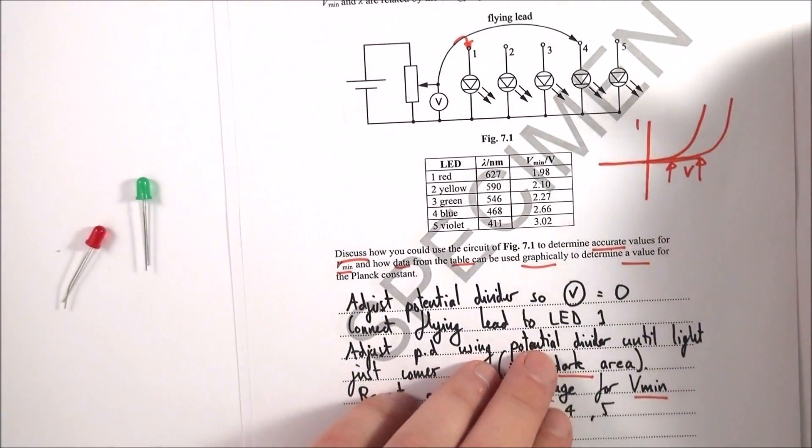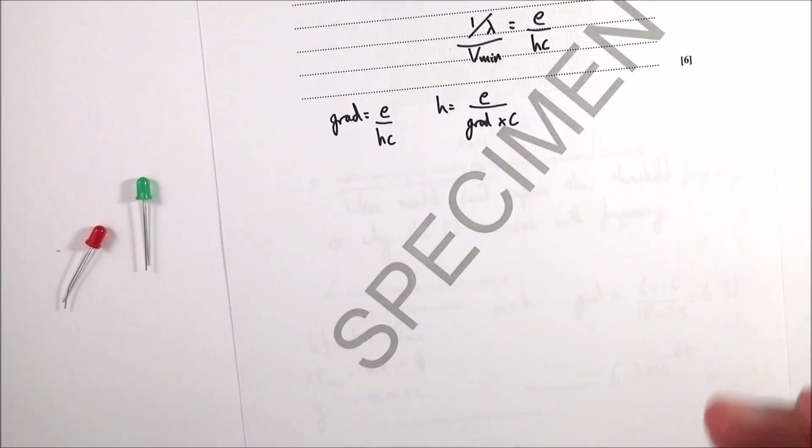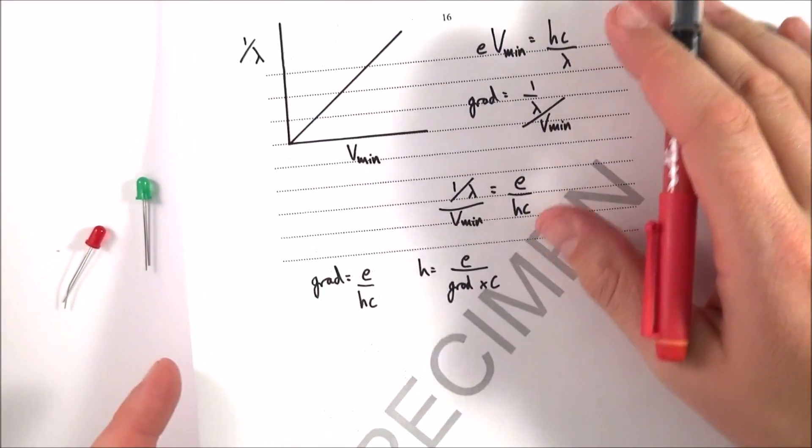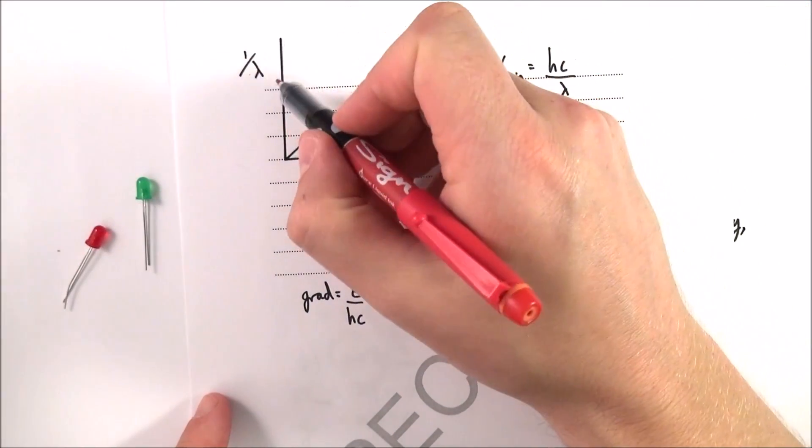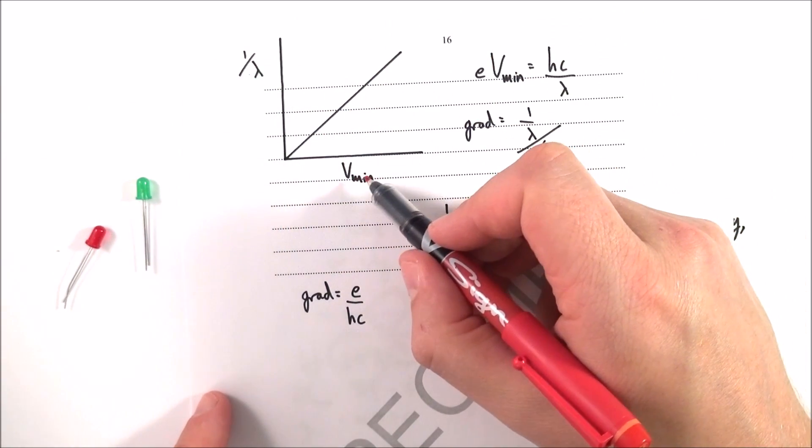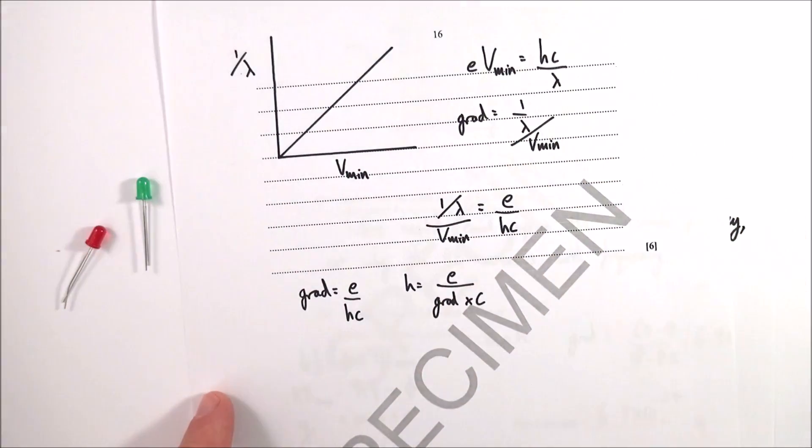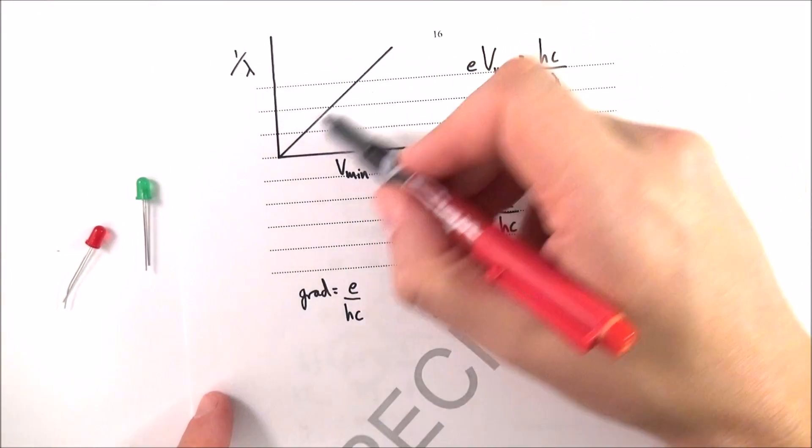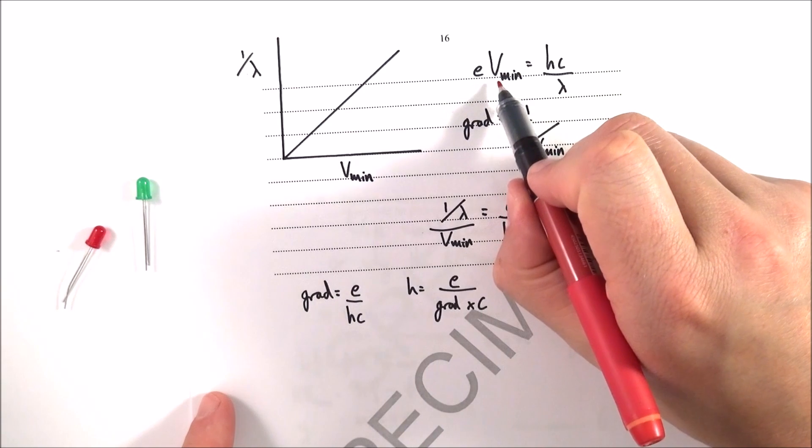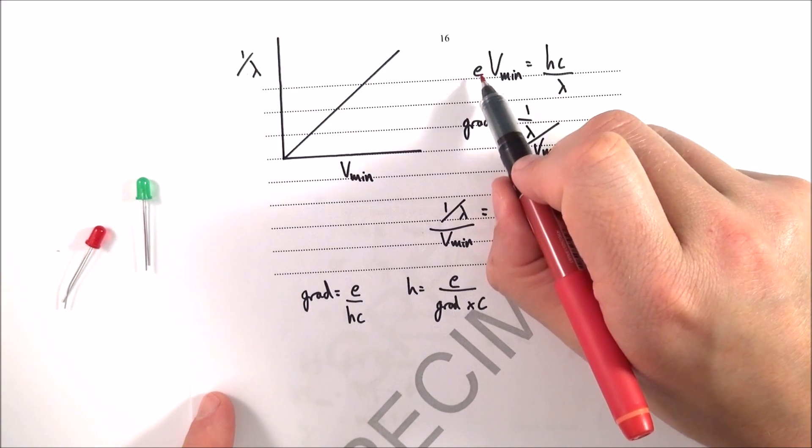We need to know about something graphical. You basically have a graph where you plot your values of one over the wavelength against your threshold voltage. What you should find is that you get a straight line that goes through the origin.